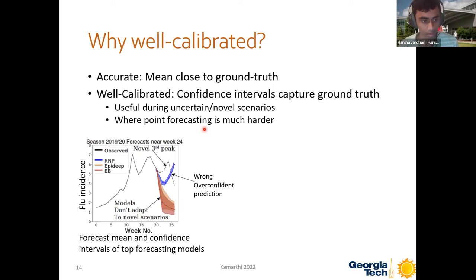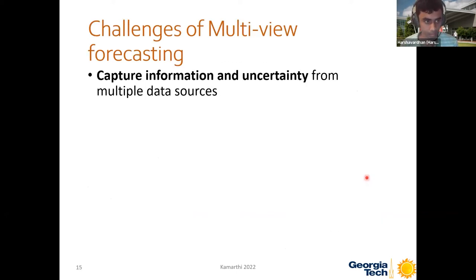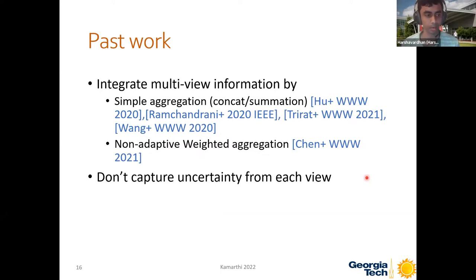For example, in the COVID-19 season of flu, there was a novel third peak in flu incidence which was not seen in previous flu seasons, and most models did not predict it. Our model predicted not only closer to the ground truth, but also provided good confidence estimates so that it captures the ground truth inside the confidence intervals. Given these challenges of multi-view forecasting, past works usually use simple concatenation or aggregation methods to integrate information from multiple views, they don't adaptively aggregate, and most importantly they don't capture the uncertainty or noise from each view separately.